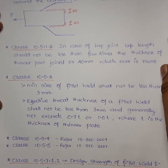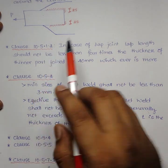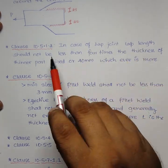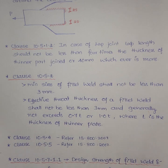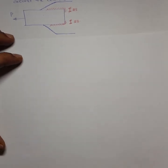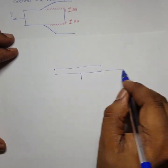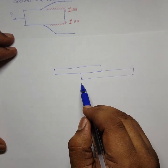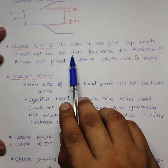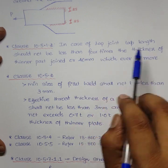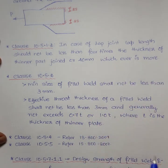Similarly, clause 10.5.1.2 covers lap joints. If you are connecting two plates using a lap joint — one plate over the other — the minimum lap length shall not be less than four times the thickness of the thinner part joined, or 40 mm, whichever is more.